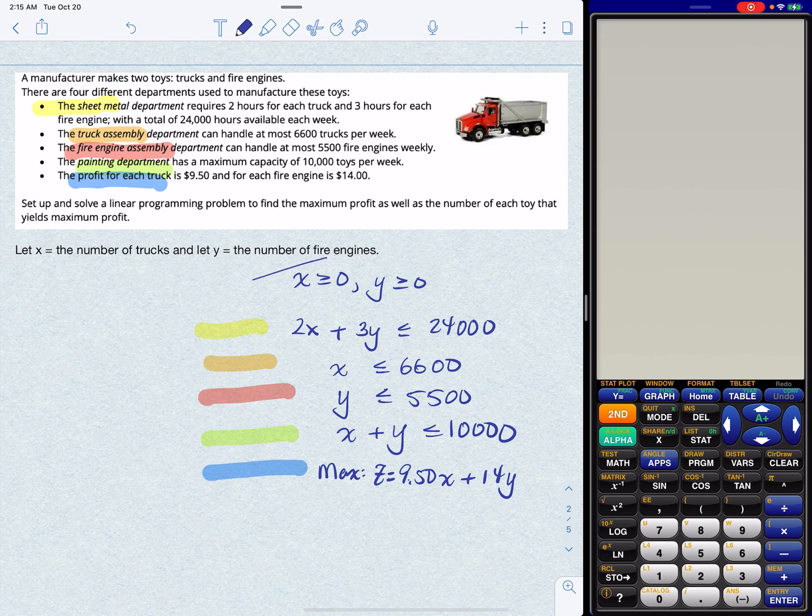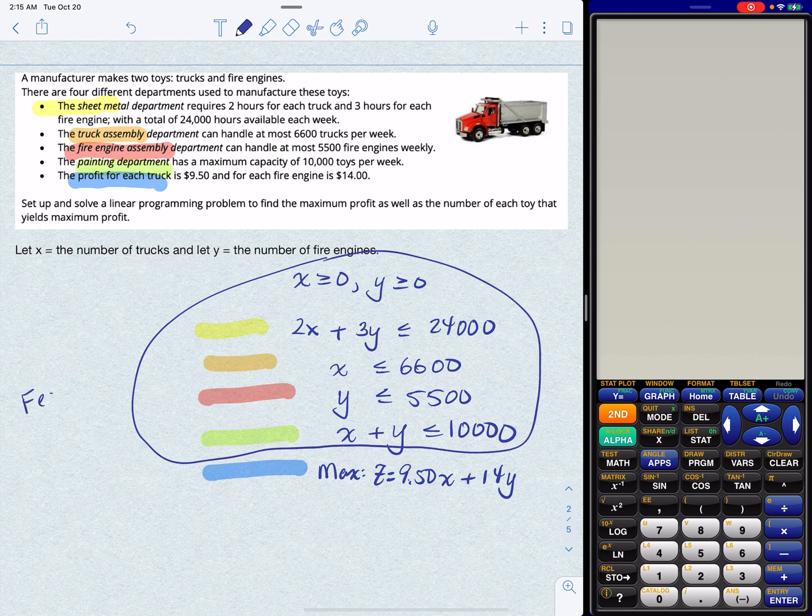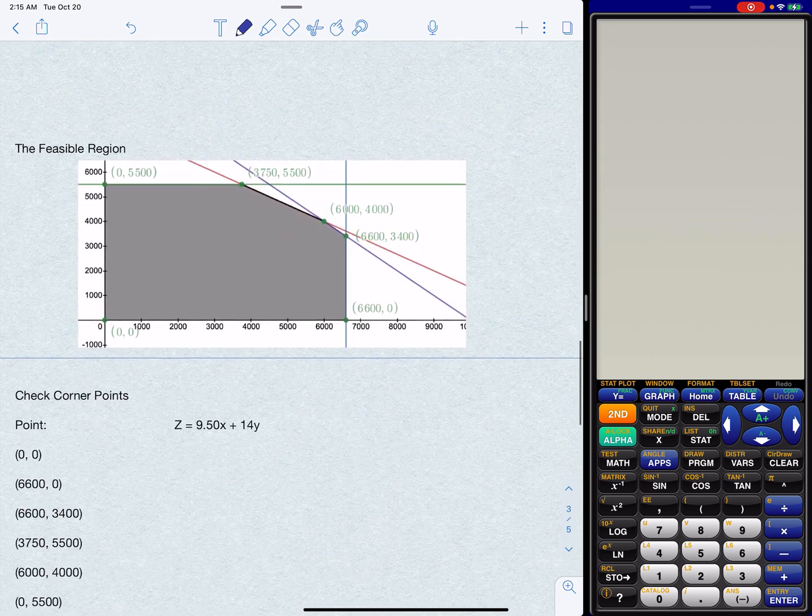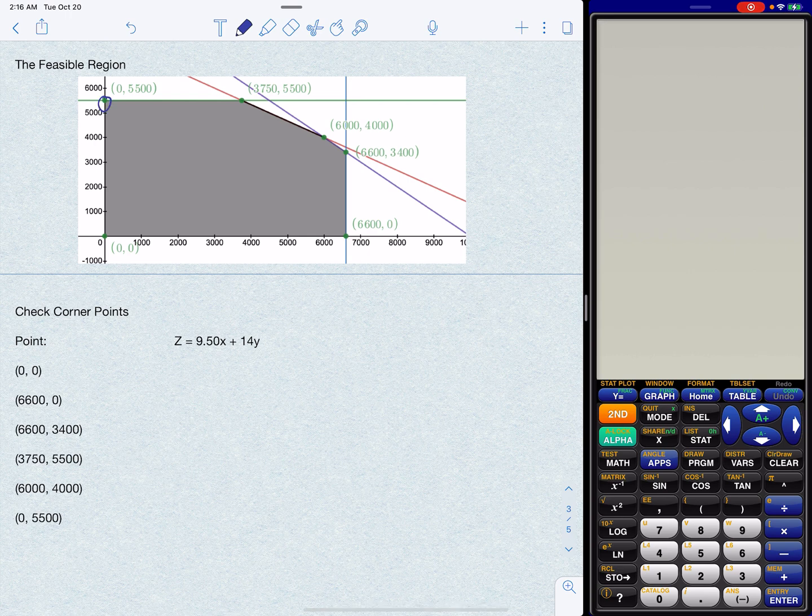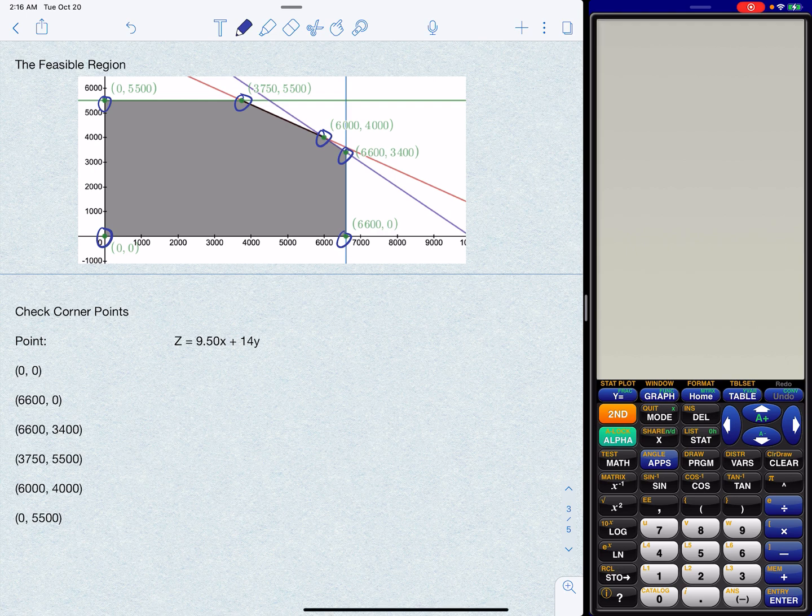So all of this information right here is your feasible region. Every solution that's possible must fall within all of those constraints. Now I have already constructed the feasible region for us. This was done in Desmos. There it is. So as you notice, there are 1, 2, 3, 4, 5, 6 corner points to this.